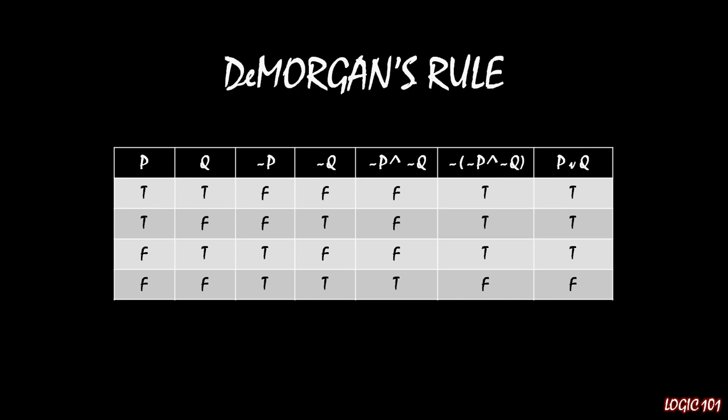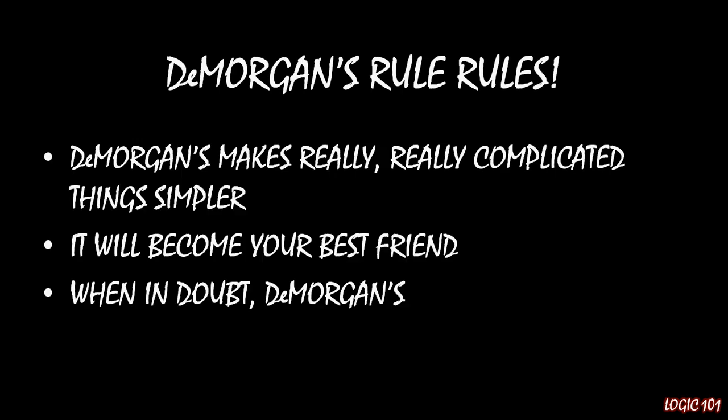That means if you see the complicated expression not (not p and not q), you can replace it with the much simpler p or q. De Morgan's Rule is great because it takes really complicated things and makes them very simple — it's going to be your best friend, and when in doubt, use De Morgan's Law. That wraps up our journey through the two versions of De Morgan's, and in the next lecture we are going to start applying these replacement rules. Join me then.